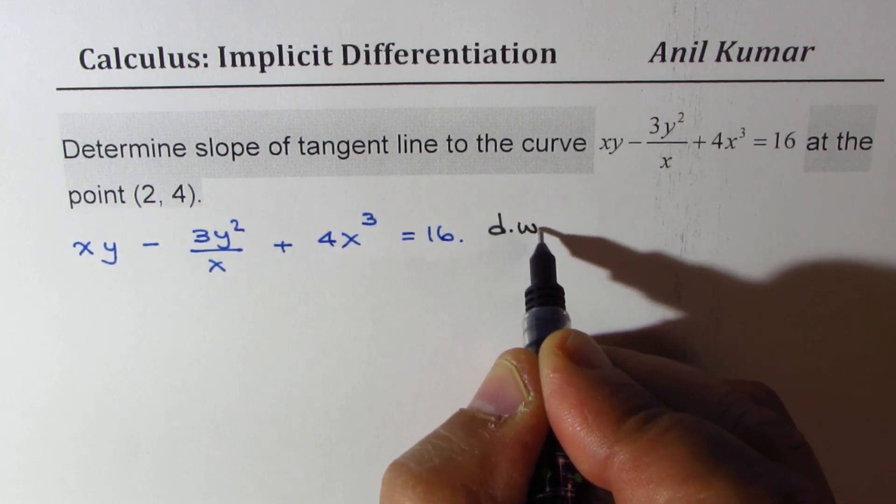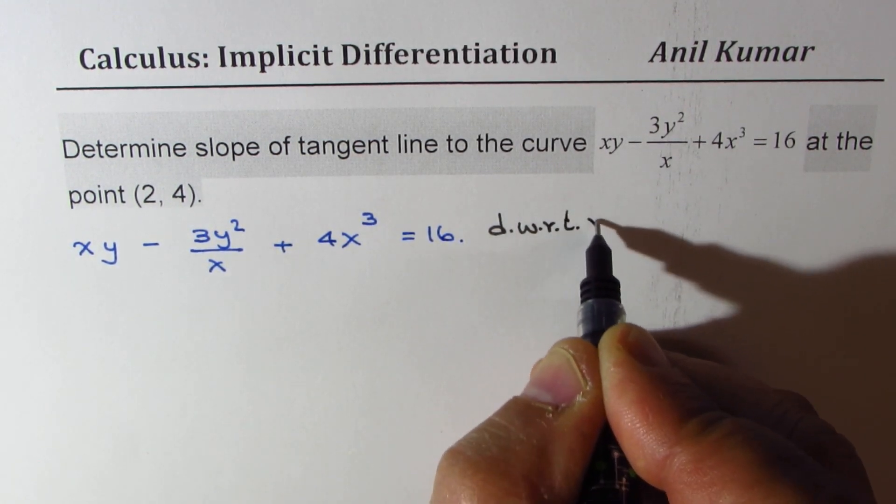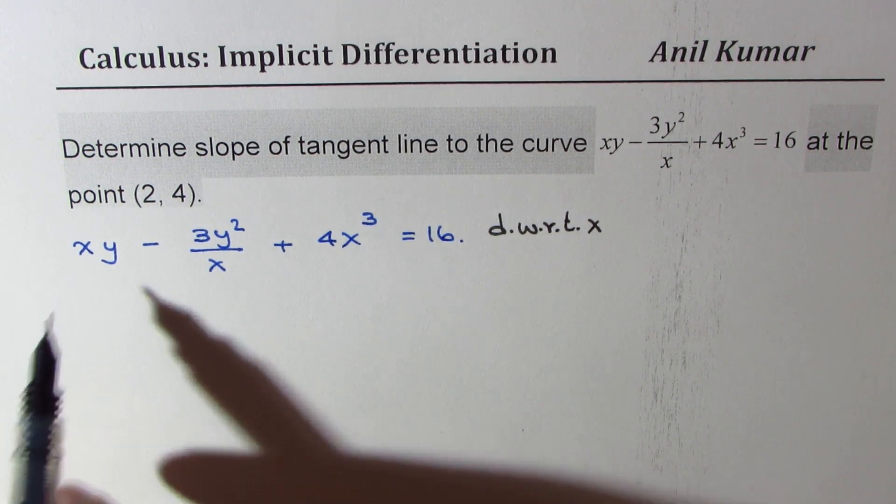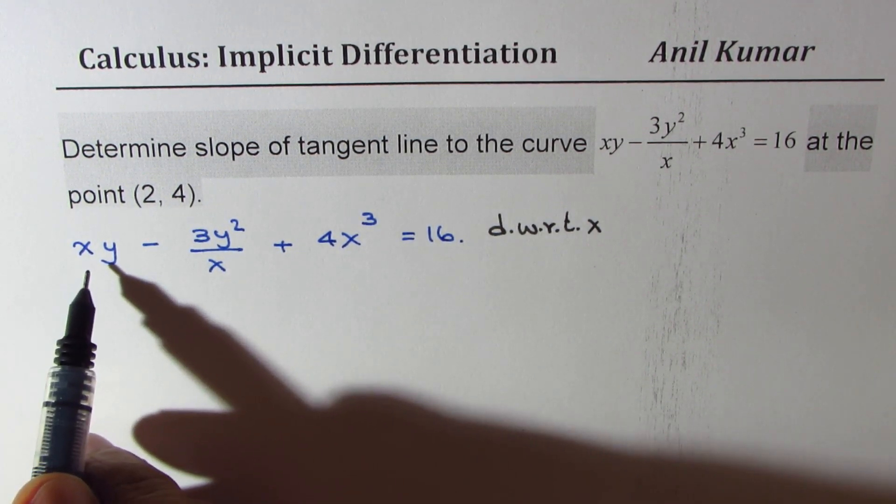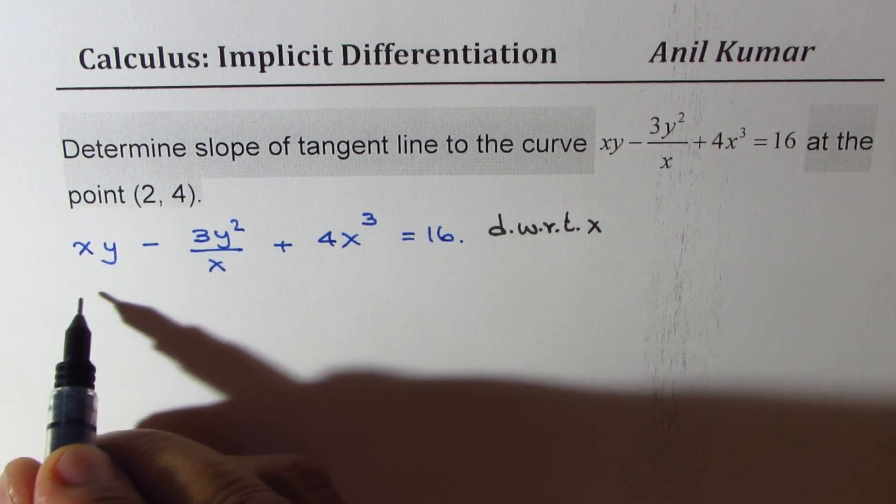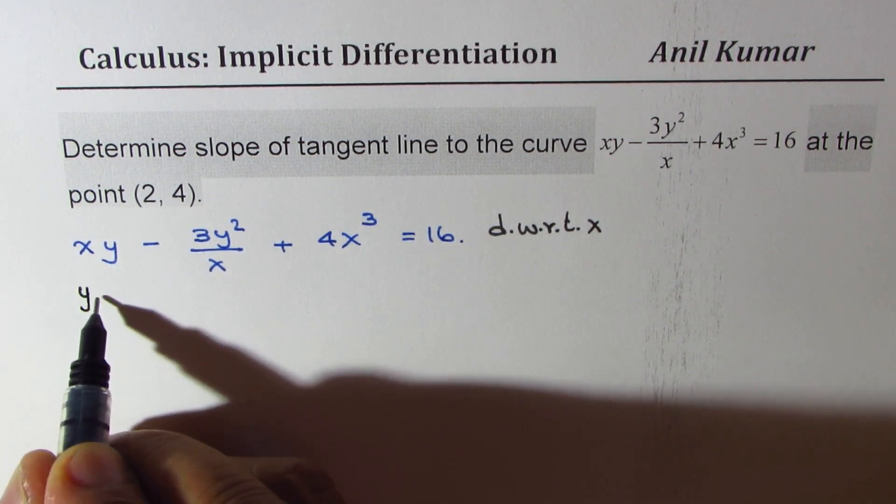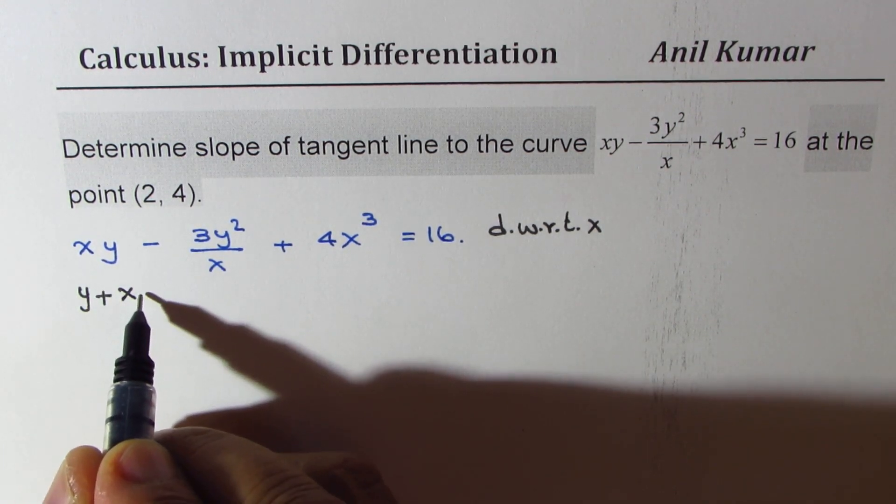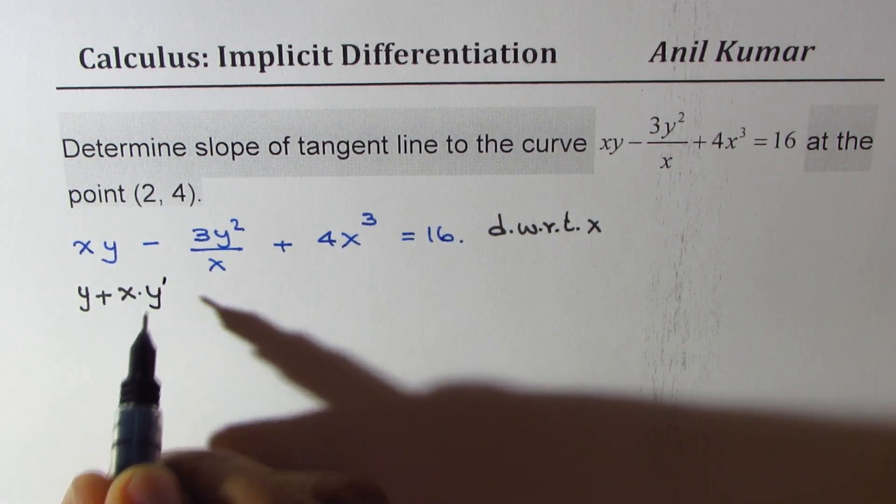We are going to differentiate with respect to x on both sides. So here we will apply the product rule. First, derivative of x is 1, so we get just y here plus x times dy dx. Let me write dy dx as y dash.